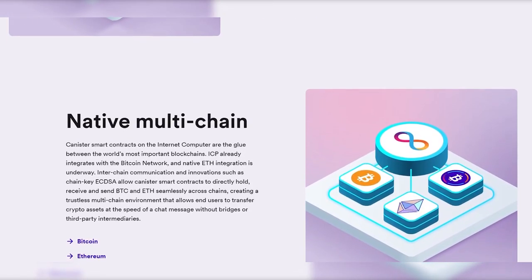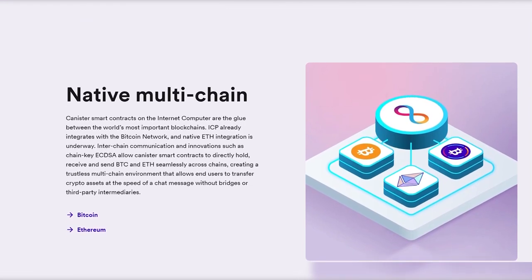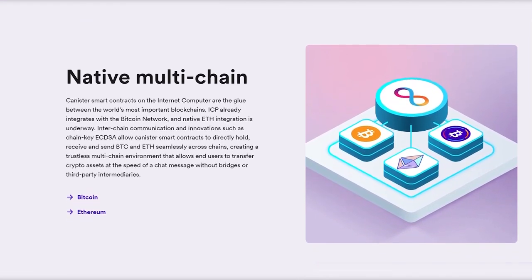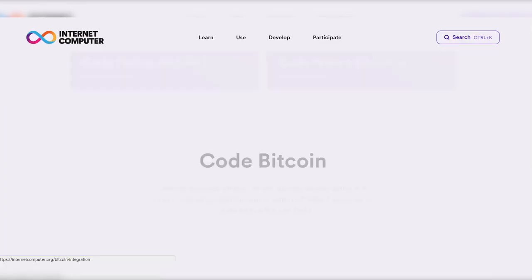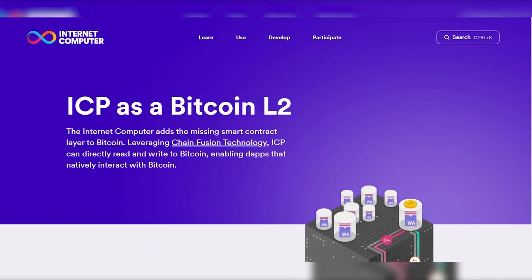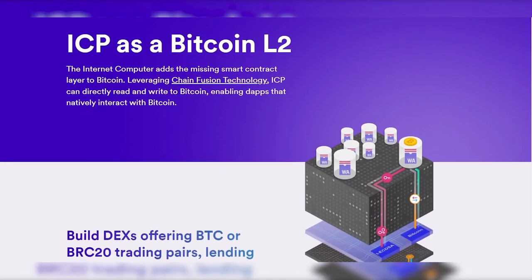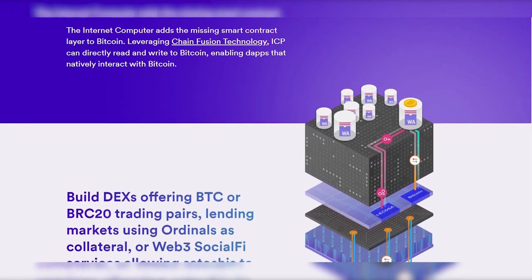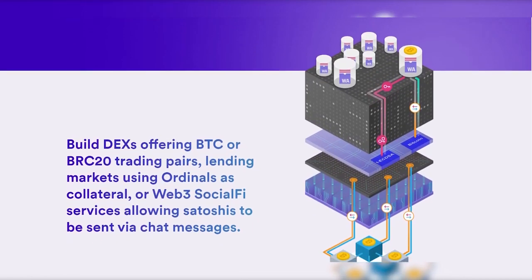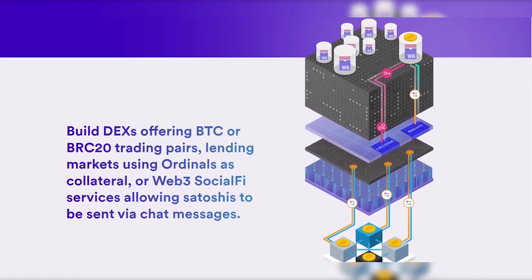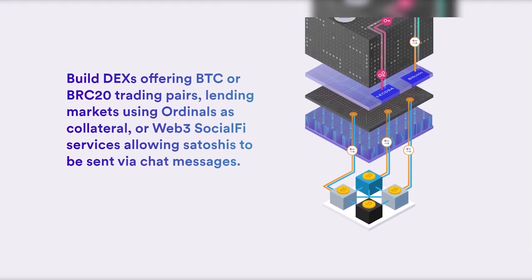Let's talk about the benefits of integration. Transactions using CKBTC are completed in 1-2 seconds and at low fees, providing a reliable tier 2 solution for Bitcoin transactions in ICP. The fault-tolerant ICP design ensures reliability and functionality even in asynchronous communication networks.